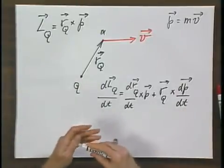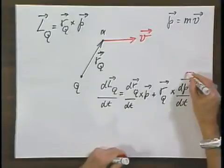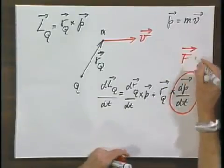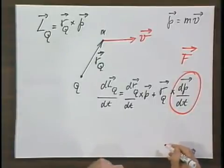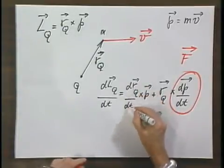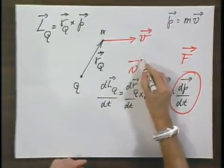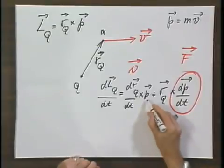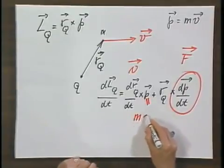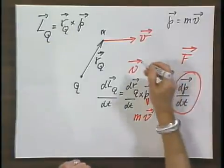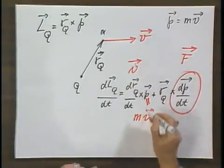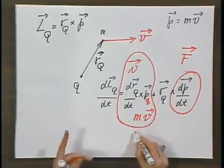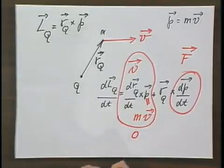Now we see something very interesting. For one thing, dP/dt is force. dR/dt is the velocity of that object M. But P equals M V. So the cross product between the vector V and M V must always be zero, because they are in the same direction. Theta is zero, and so the sine of theta is zero.